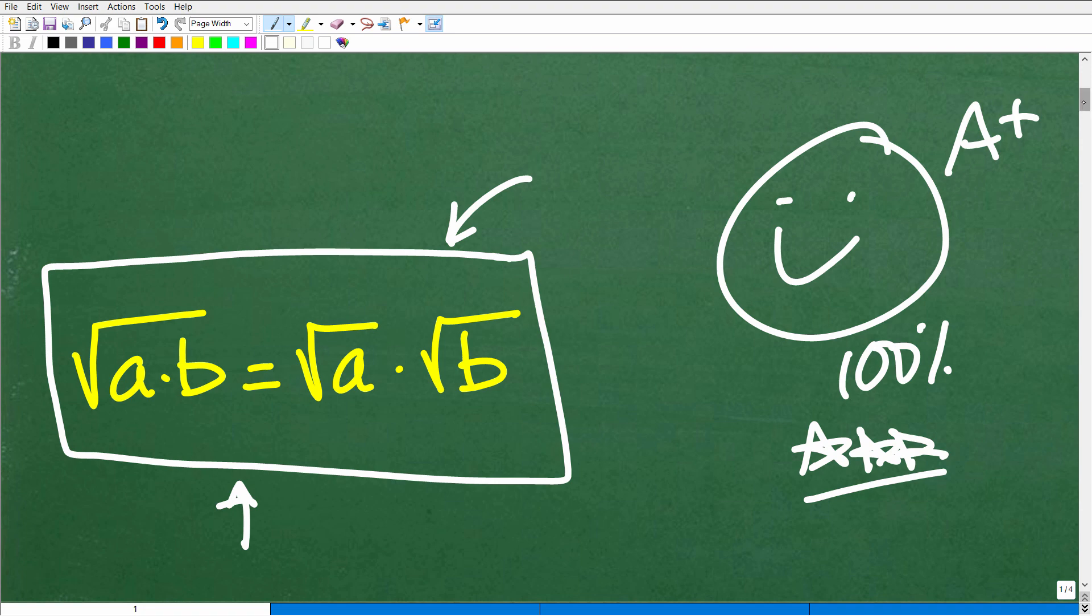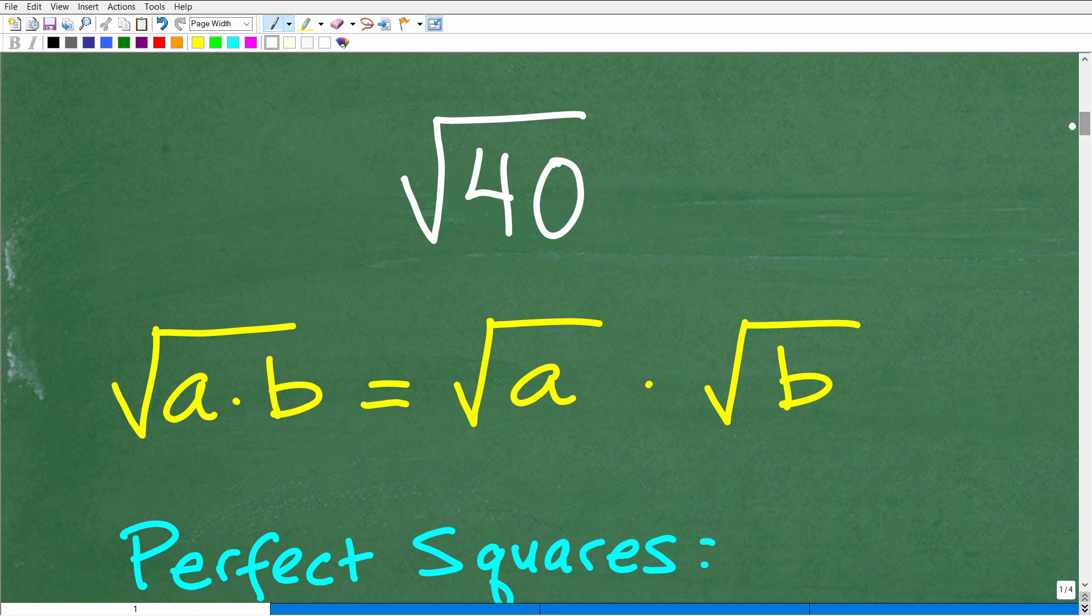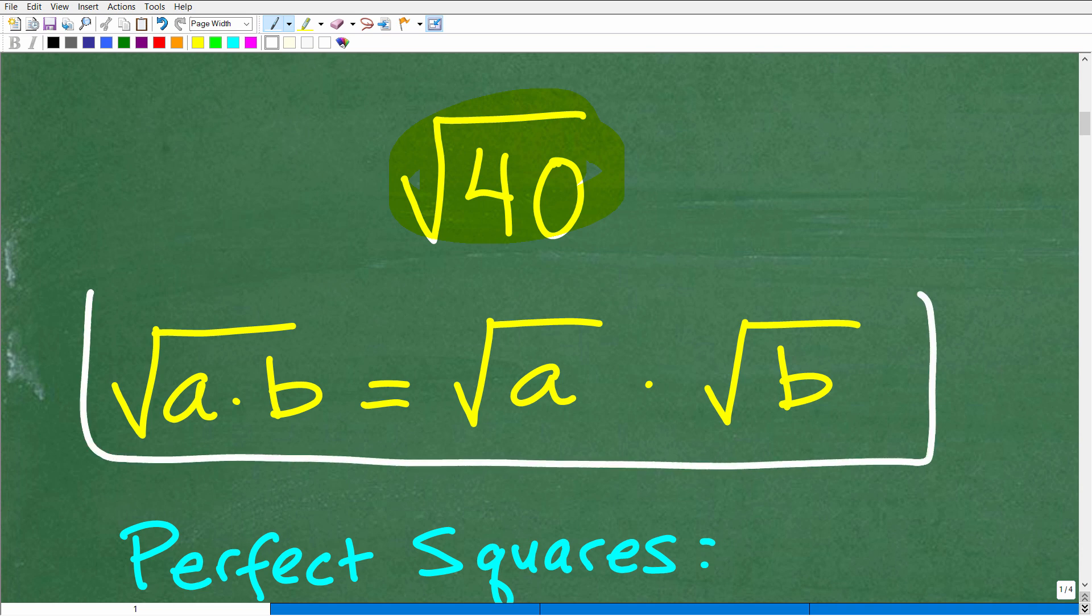So let's go ahead and get into this right now. This is not going to be that difficult of an example, but this is something you definitely want to practice. So here is our problem, the square root of 40. Now, we don't know yet. Let's just say you had this problem on a test, quiz, or homework. You don't know, in fact, whether you can simplify this. However, if you can, what you need to be thinking about is this property again.